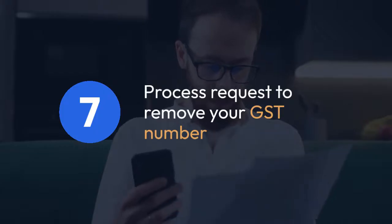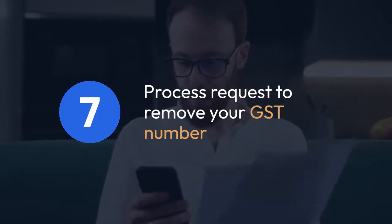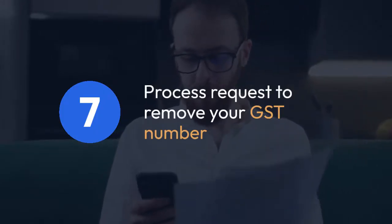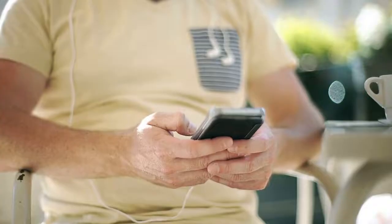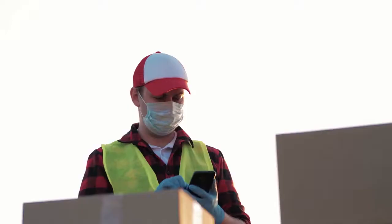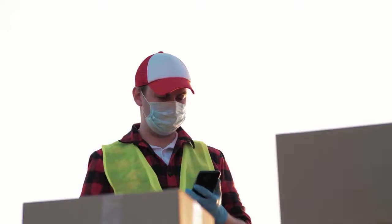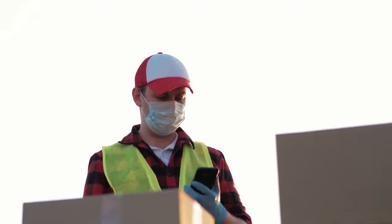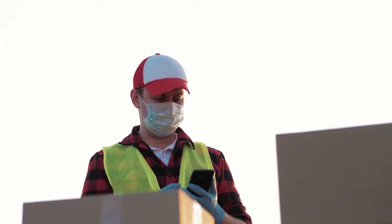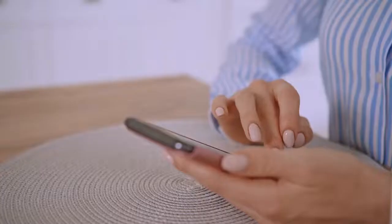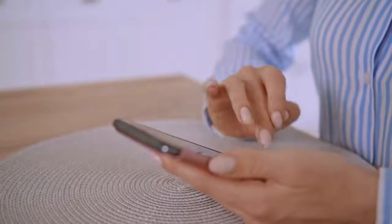After confirming, Flipkart will usually process the request to remove your GST number, and there will be a confirmation message once successfully removed. You can then double-check your profile to confirm that your GST number is no longer listed under your Business or Address Details. If you encounter any issues or can't find the specific options mentioned, try searching the Settings or looking for a Help or FAQ section within the app — they might offer instructions specific to your version.